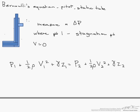We can make some assumptions that make this a lot easier. If we say that Z1 equals Z2, in other words it is horizontal, we also will say that point 2 is going to be the stagnation point, so V2 equals zero.